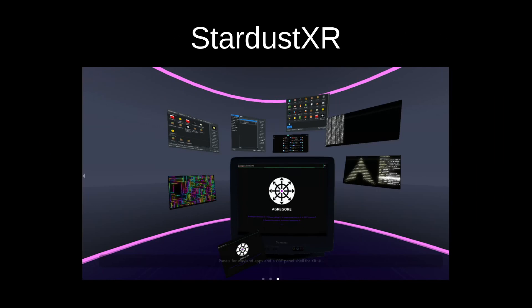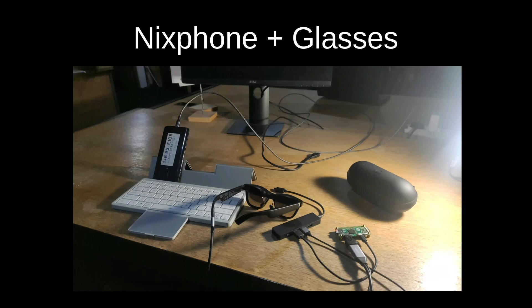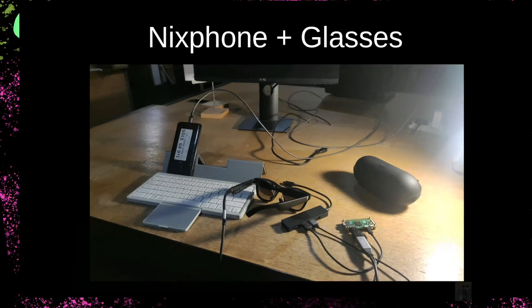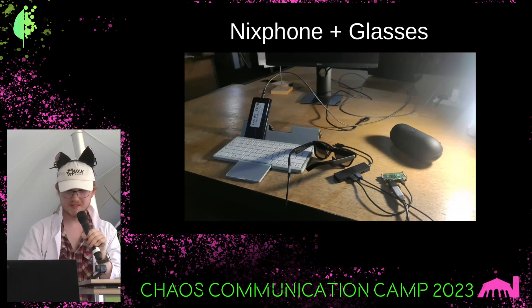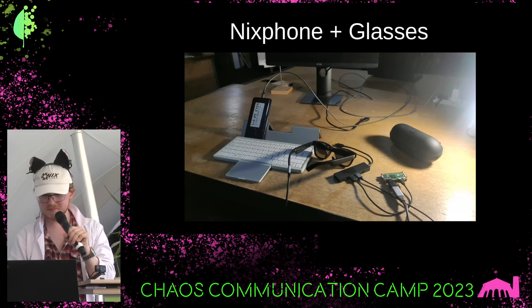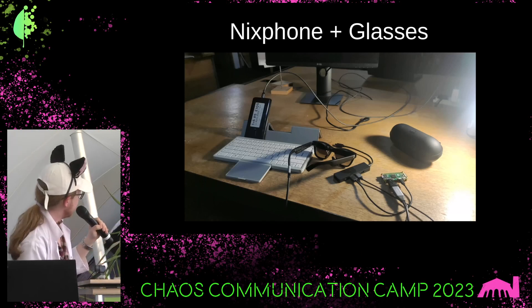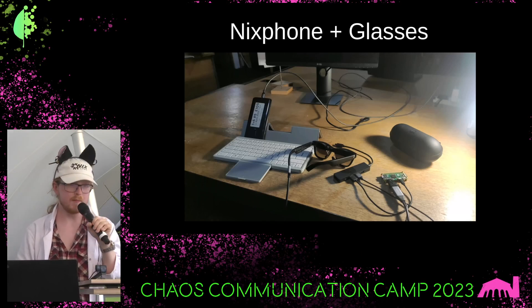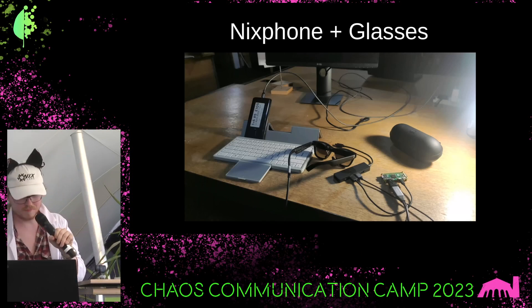Stardust XR is a VR display thing — it allows you to pick windows up with your fingers. You could use it with these glasses. I've been using the phone with these glasses. If you think the display is too small, don't, because you can just put it on these glasses and you can have a big monitor or a whole world of monitors around you.